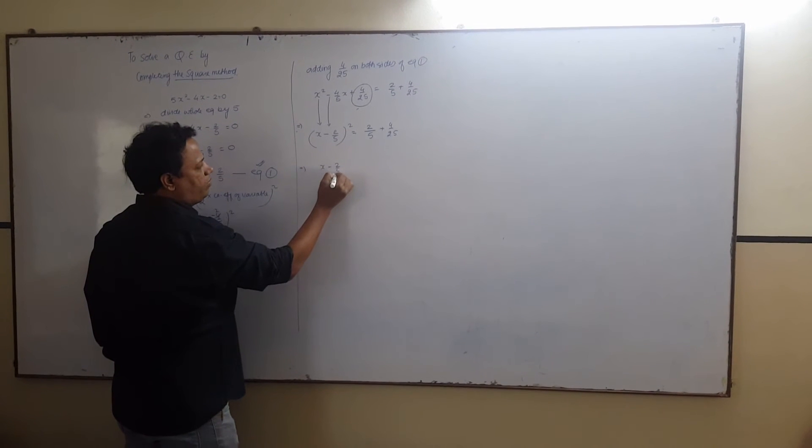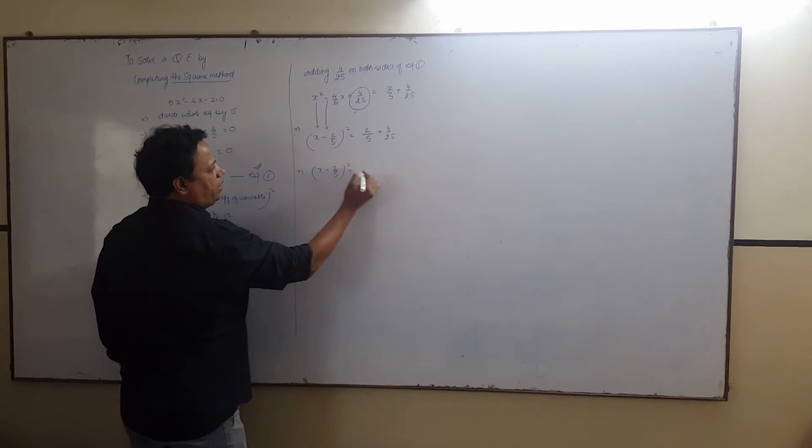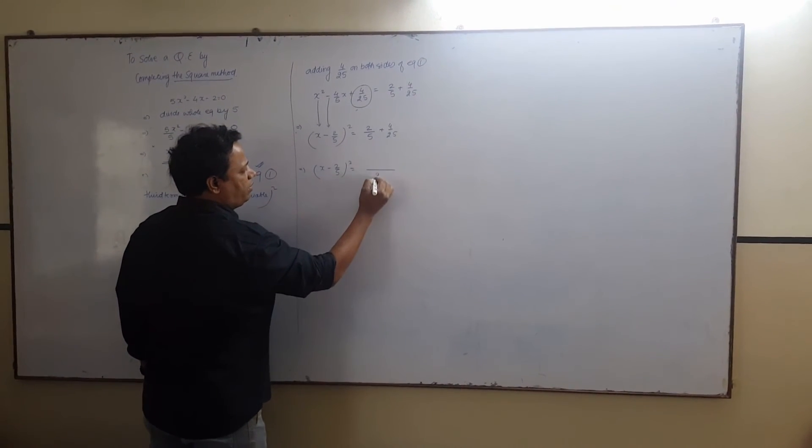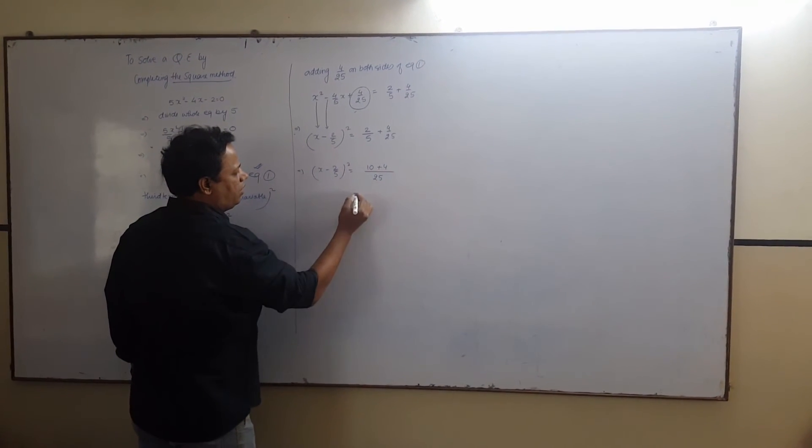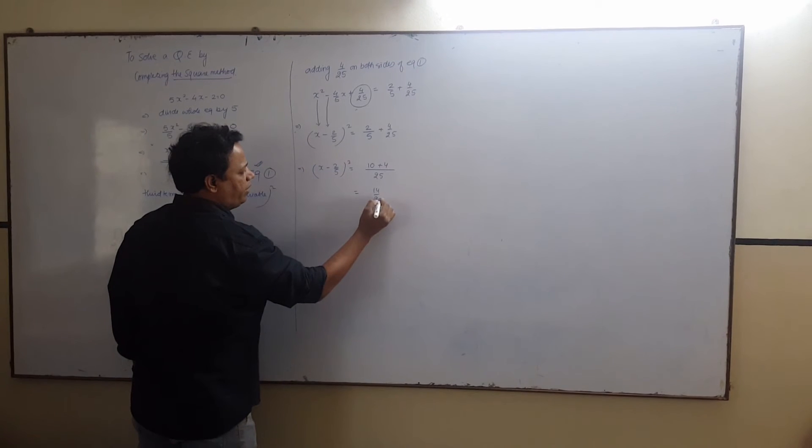Then, x minus 2 upon 5 whole square equals to, LCM will be how much over here? 5. Then, 2, 5 is 10 plus 4. We are going to get 14 upon 25.